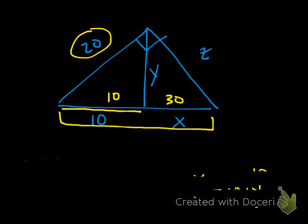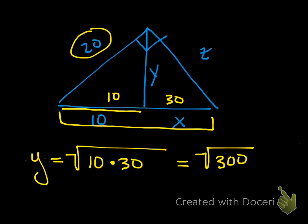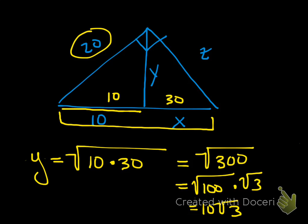Now solving for Y, the altitude: Y equals the geometric mean of the two hypotenuse segments, which are 10 and 30. So Y equals the square root of 300. The square root of 300 equals the square root of 100 times the square root of 3, which equals 10 times the square root of 3.